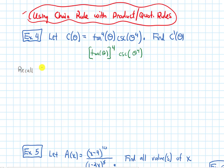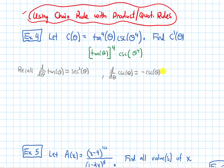Let's recall what d/dθ of tangent of theta is, and also d/dθ of cosecant of theta. The derivative of tangent of theta is secant squared, and the derivative of cosecant is negative cosecant cotangent. Both of those are going to be relevant.